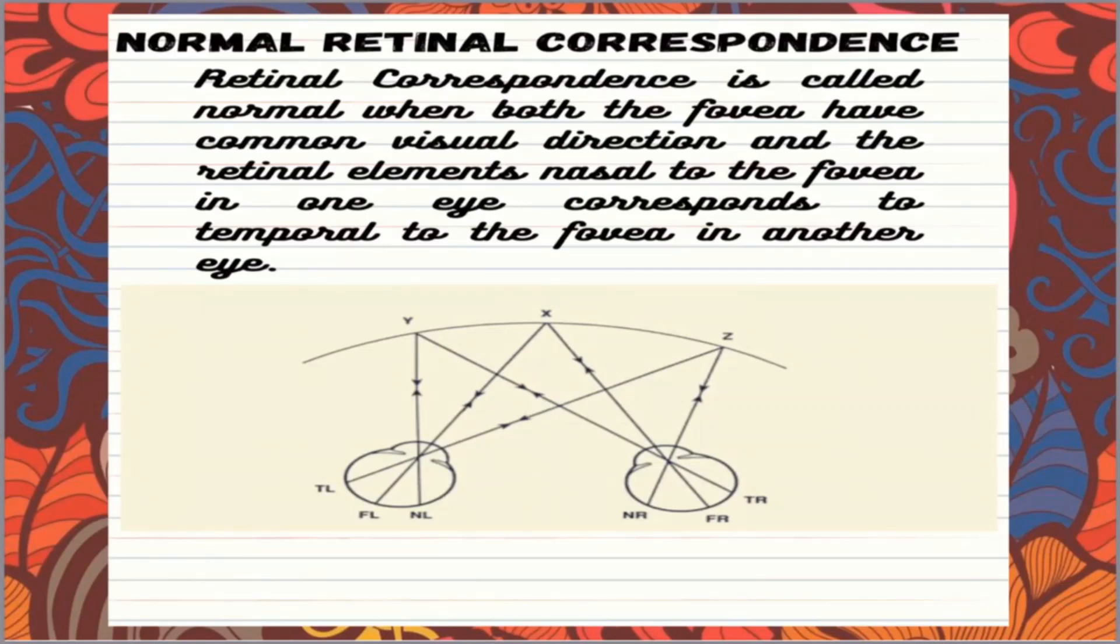Now is it not interesting that we have two retinas yet we produce just a single image? Kaise possible hota hai? It's because of the presence of corresponding points in our retinas. Corresponding means what? Equivalent, right? So humare retina mein jo points stimulate hoti hai, usi ka corresponding point dousrei retina mein bhi hota hai.